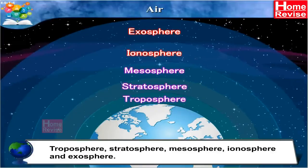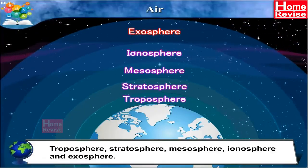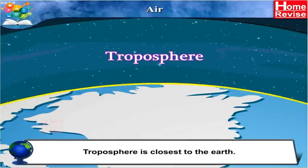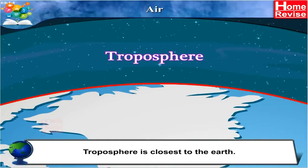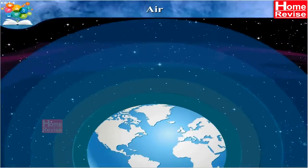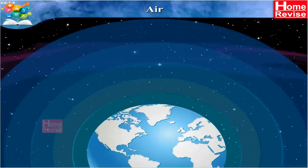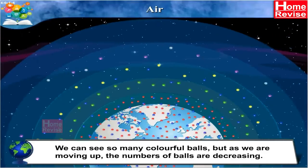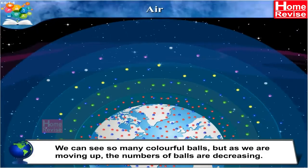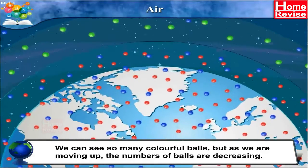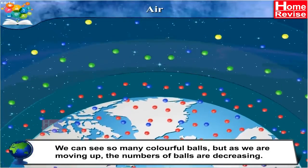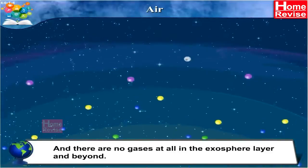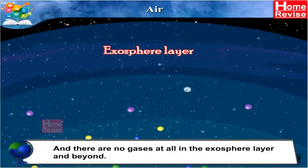Troposphere is closest to the earth. Let's observe these layers more closely. We can see many colourful balls, but as we move up, the number of balls decreases. There are no gases at all in the exosphere layer and beyond.